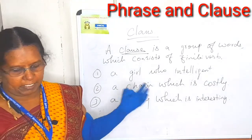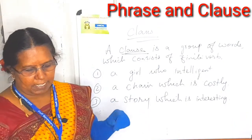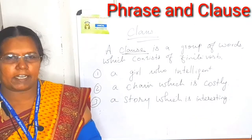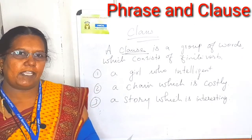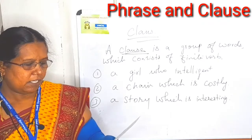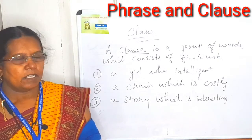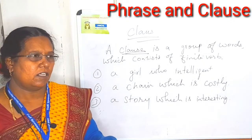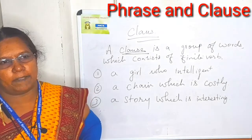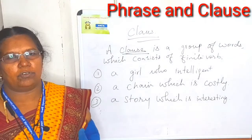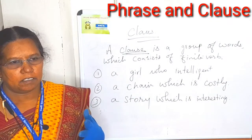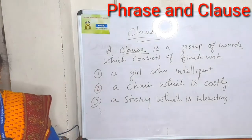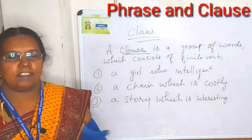Third one: adjective clause. It acts as an adjective and describes a noun. Example: I went to the place where I was born. Here it describes the place. All kinds of clauses are given in the book with simple sentences. When you go through them daily, you can identify the sentence and how to differentiate clause and phrase.